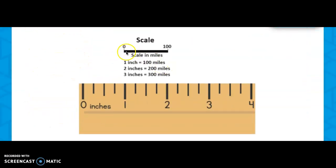Here's an example of a scale. This is telling you that one inch on the map equals 100 miles. Two inches would be 200 miles. Three inches would be 300 miles.